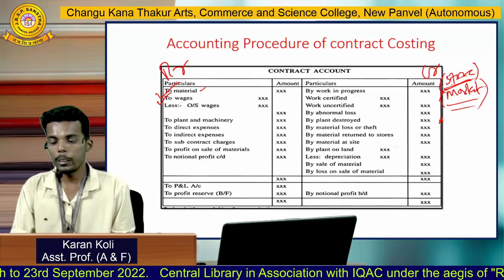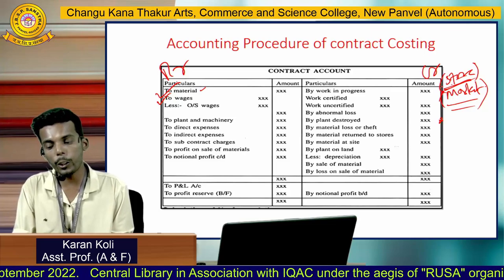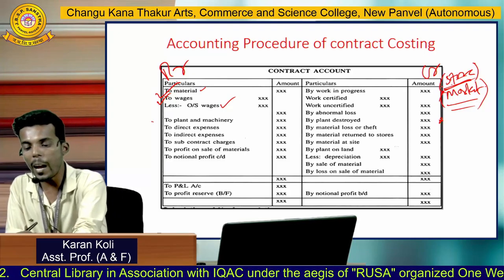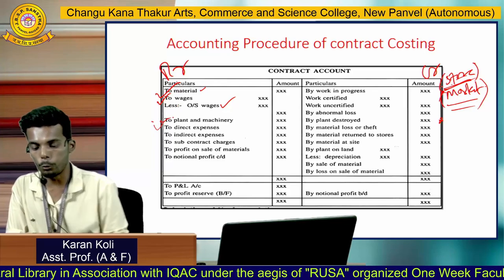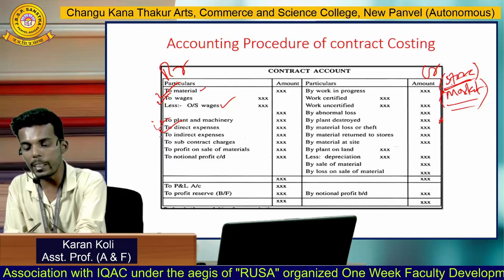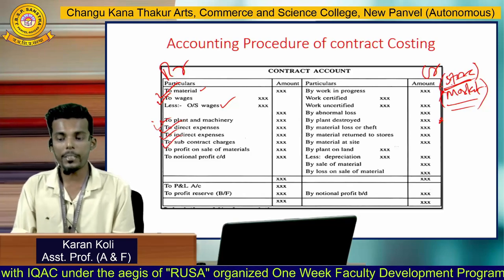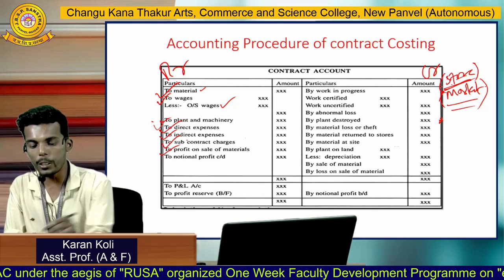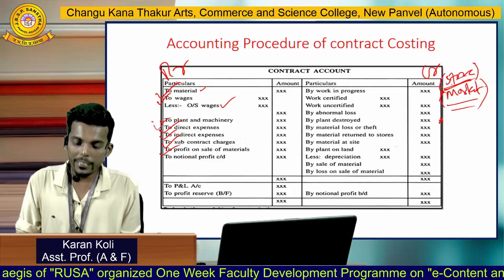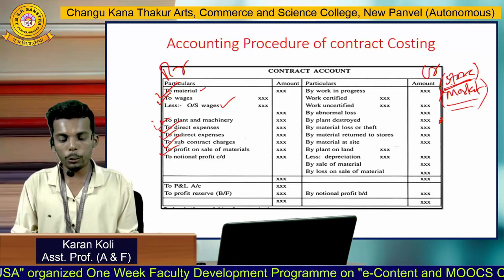Other items on the debit side of the contract account include: plant issued, machinery issued, direct expenses, indirect expenses, subcontract expenses, and profit on sales of material and profit on sales of assets — all debited to the contract account.